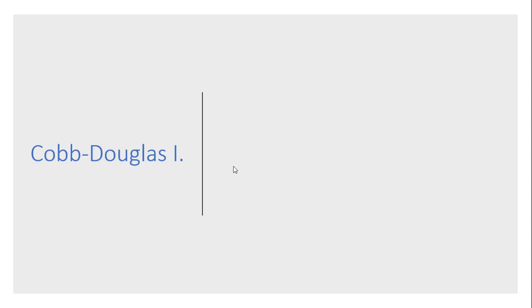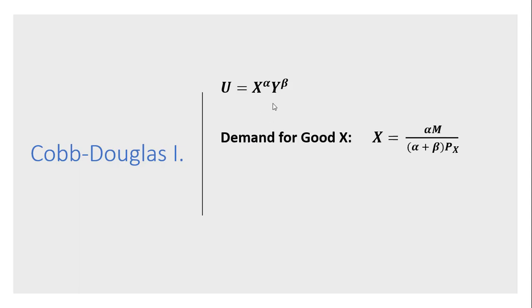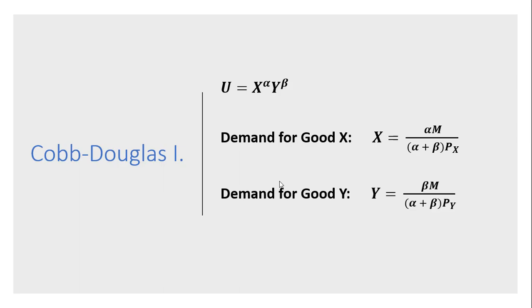So we're going to start with Cobb-Douglas. We have a Cobb-Douglas utility function, good x and good y, raised to some positive exponents, alpha and beta. Given that general form, the demand for good x will be given by this equation. m is income, and p subscript x is the price of good x. And the demand for good y will be given by this equation. m represents the consumer's income, and p subscript y is the price of good y.